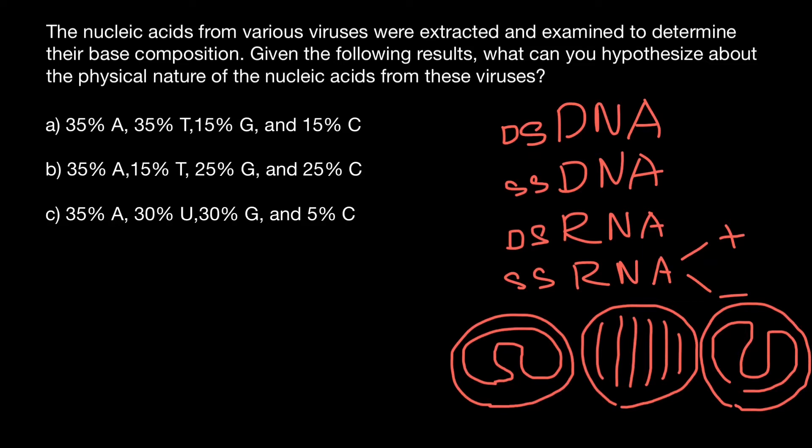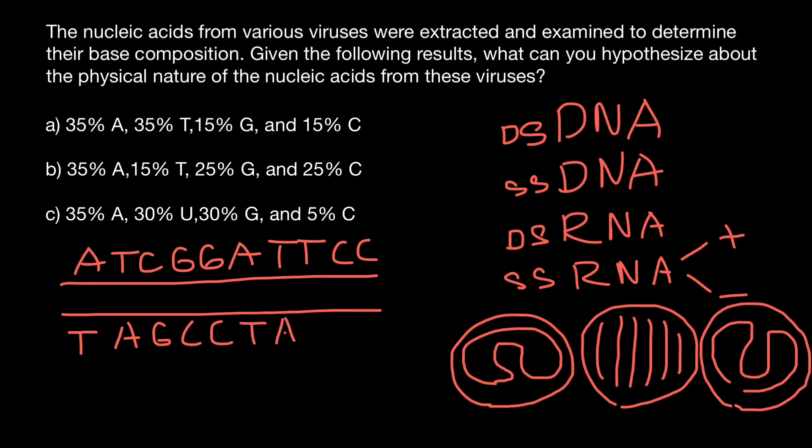What else you need to know is that when we have double-stranded DNA, let's say this is double-stranded DNA and we have a random sequence, for example: A, T, C, G, G, A, T, T, C, C. On the other corresponding strand of the DNA, we are going to have thymine, adenine, guanine, cytosine, cytosine, thymine, adenine, adenine, guanine, guanine here. Because adenine always base pairs with thymine and cytosine base pairs with guanine.